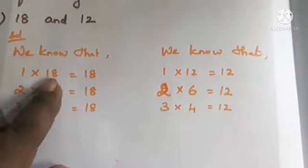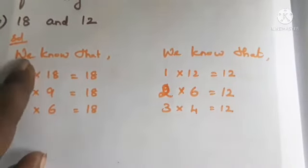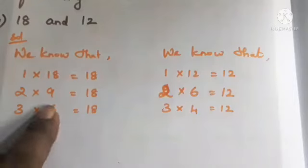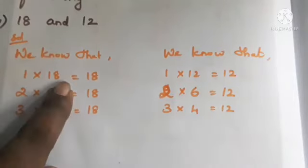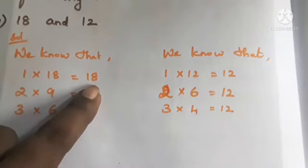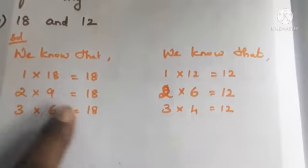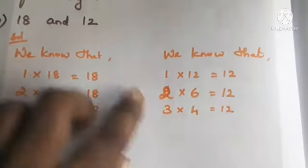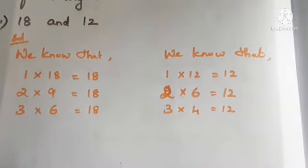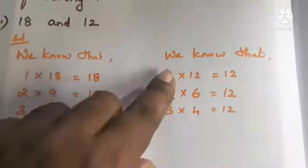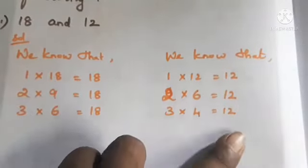Step 1: factors of 18 are found using multiplication — 1 into 18 is 18, 2 into 9 is 18, 3 into 6 is 18. Step 2: factors of 12 — 1 into 12 is 12, 2 into 6 is 12, 3 into 4 is 12.